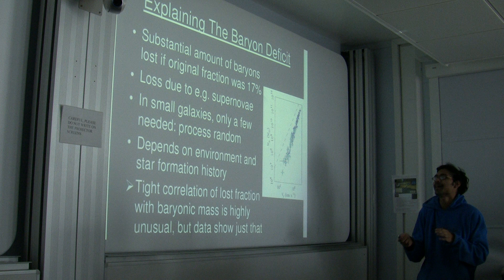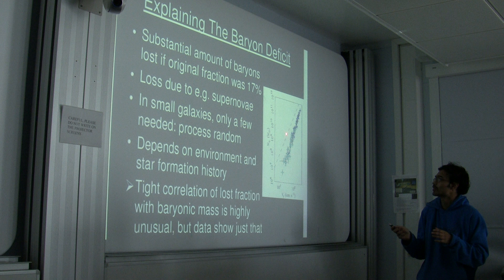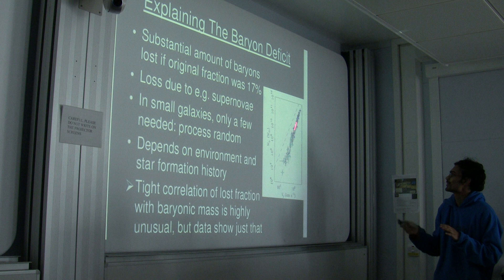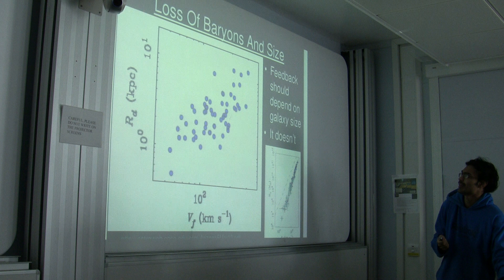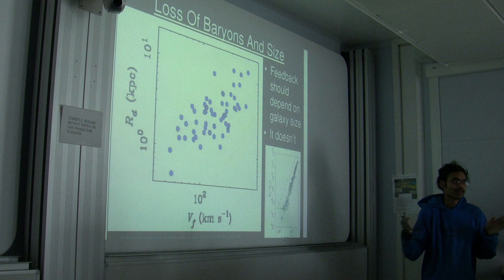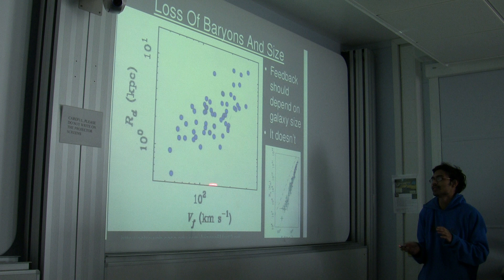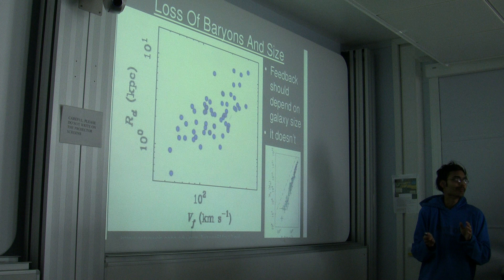The process should be random and also depend on the environment of the galaxy — how much gas can it accrete, and how many stars it's formed. Having a tight correlation of what fraction of baryons you've lost with the mass is unusual, because there should be scatter. If a galaxy is the same mass but much bigger, it should be much easier to blow gas out. Galaxies obviously don't all have the same size, so there could be a huge range of sizes for the same mass, yet they must all have lost the same fraction of baryons — which is a little bit weird.